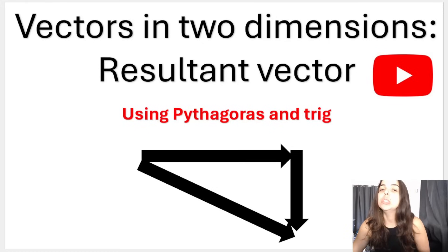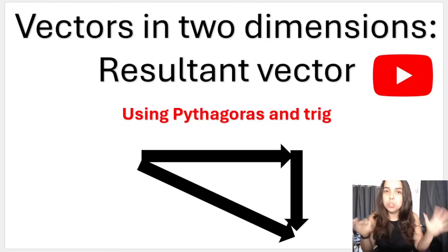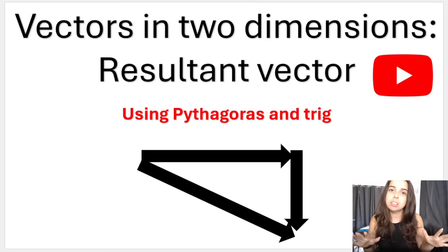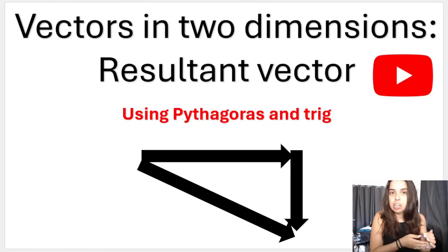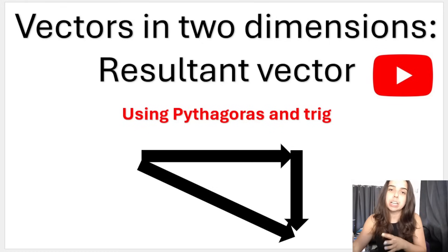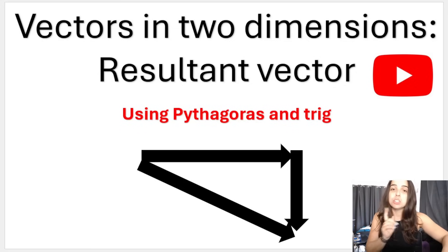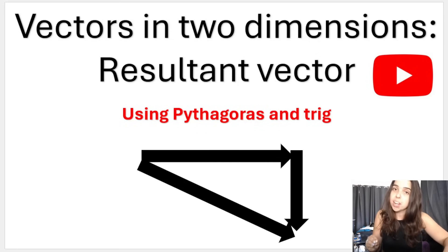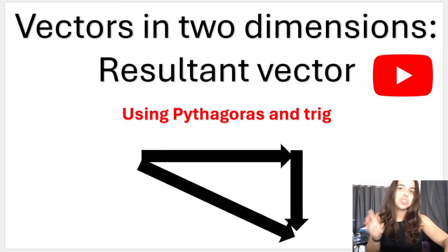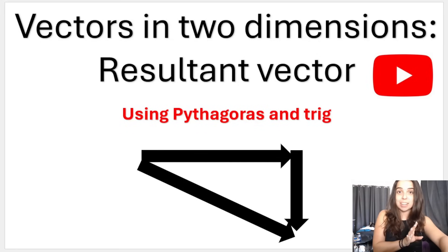In this video we will focus on doing vectors in two dimensions where I use Pythagoras and trig, namely tan theta, to help me find the direction. But before we move on to vectors in two dimensions, I just quickly want to remind you about vectors in one dimension, because if you can't do vectors in one dimension, you won't be able to do vectors in two dimensions.